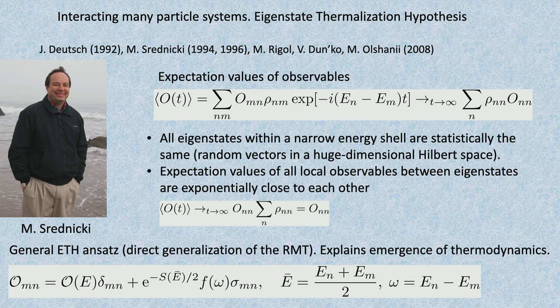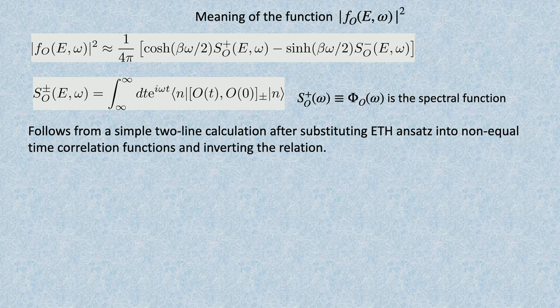The ETH ansatz, formulated by Srednicki, states: if you take a local physical observable and ask about its matrix elements in the eigenbasis of an ergodic Hamiltonian, you get microcanonical averages on the diagonals and some random suppressed matrix elements away from the diagonal. There is an extra ingredient: a smooth function of energy difference, where ω = E_n − E_m. Random matrix theory would mean this function is energy-independent and equal to identity. ETH introduces structure on top of random matrix theory — there's no proof, but lots of numerical tests confirm it works.